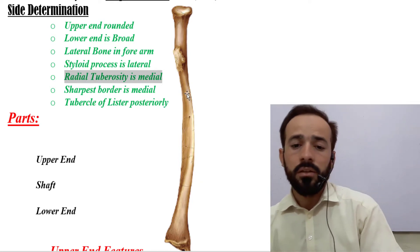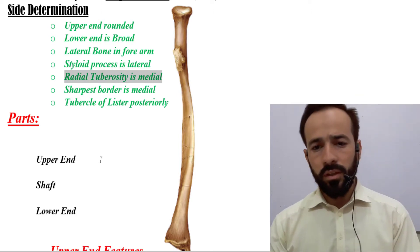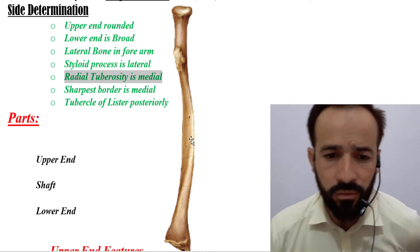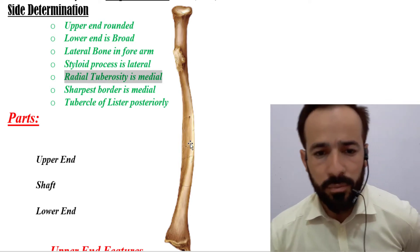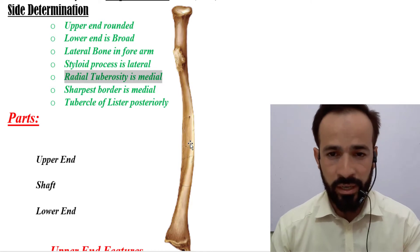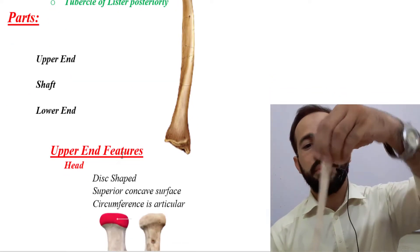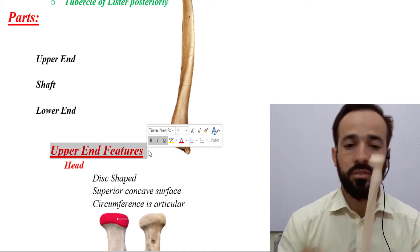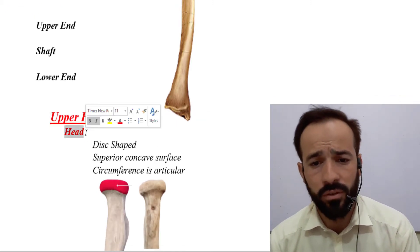Now let us go through the parts of this bone. As a typical long bone it has three parts: the upper end, the shaft, and the lower end. You can see on screen: this is the upper end, this is the shaft, and this is the lower end.